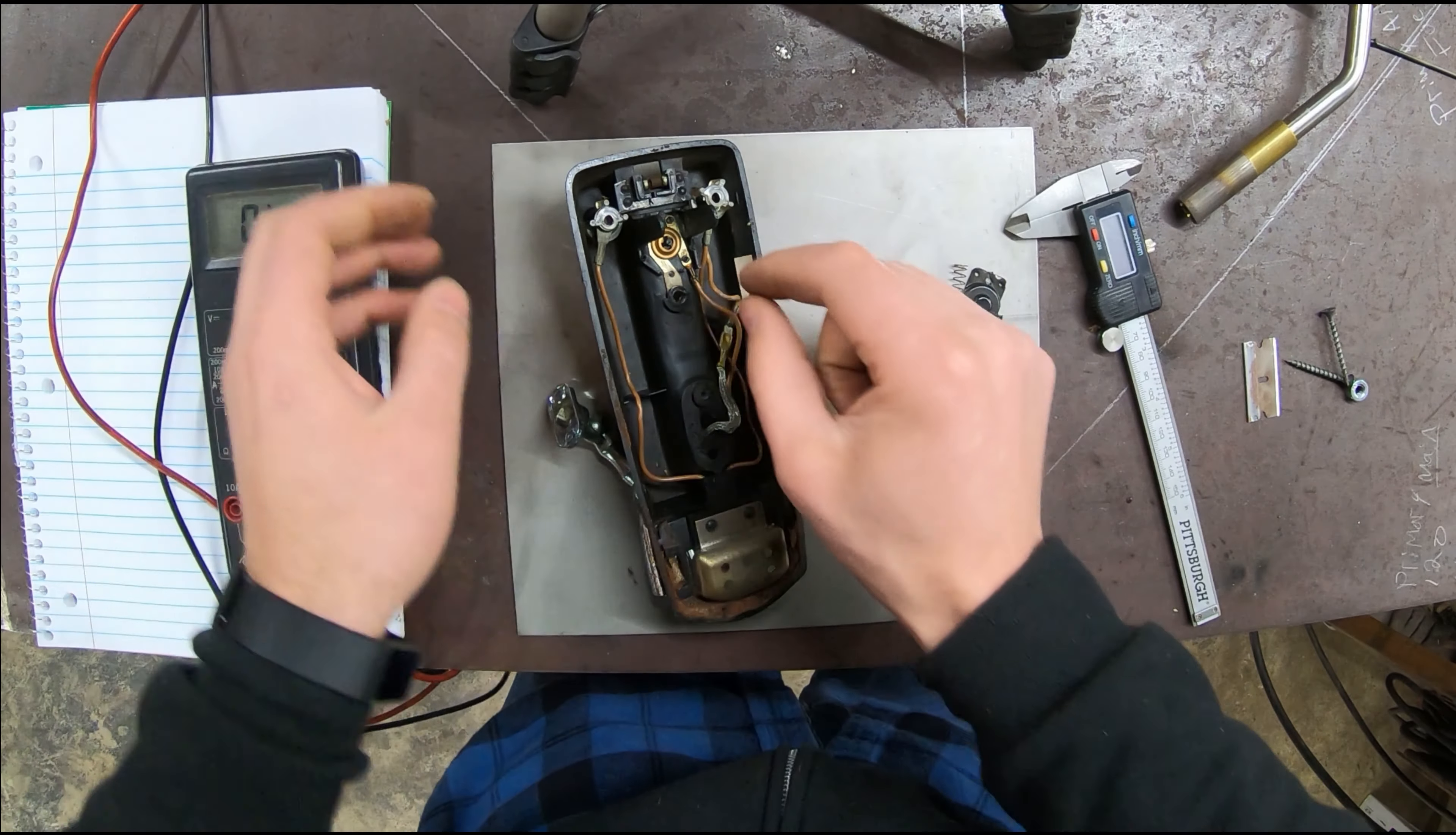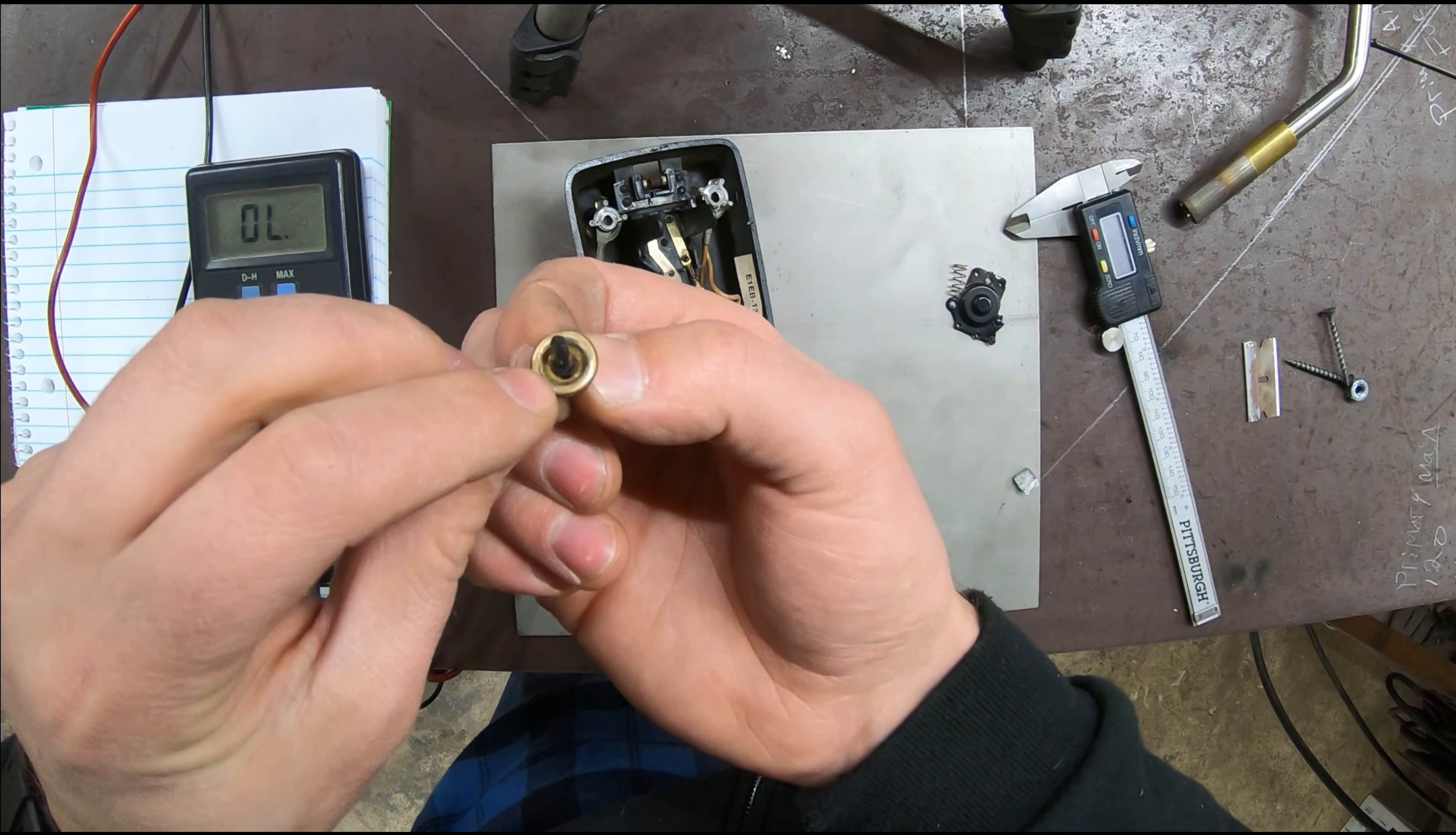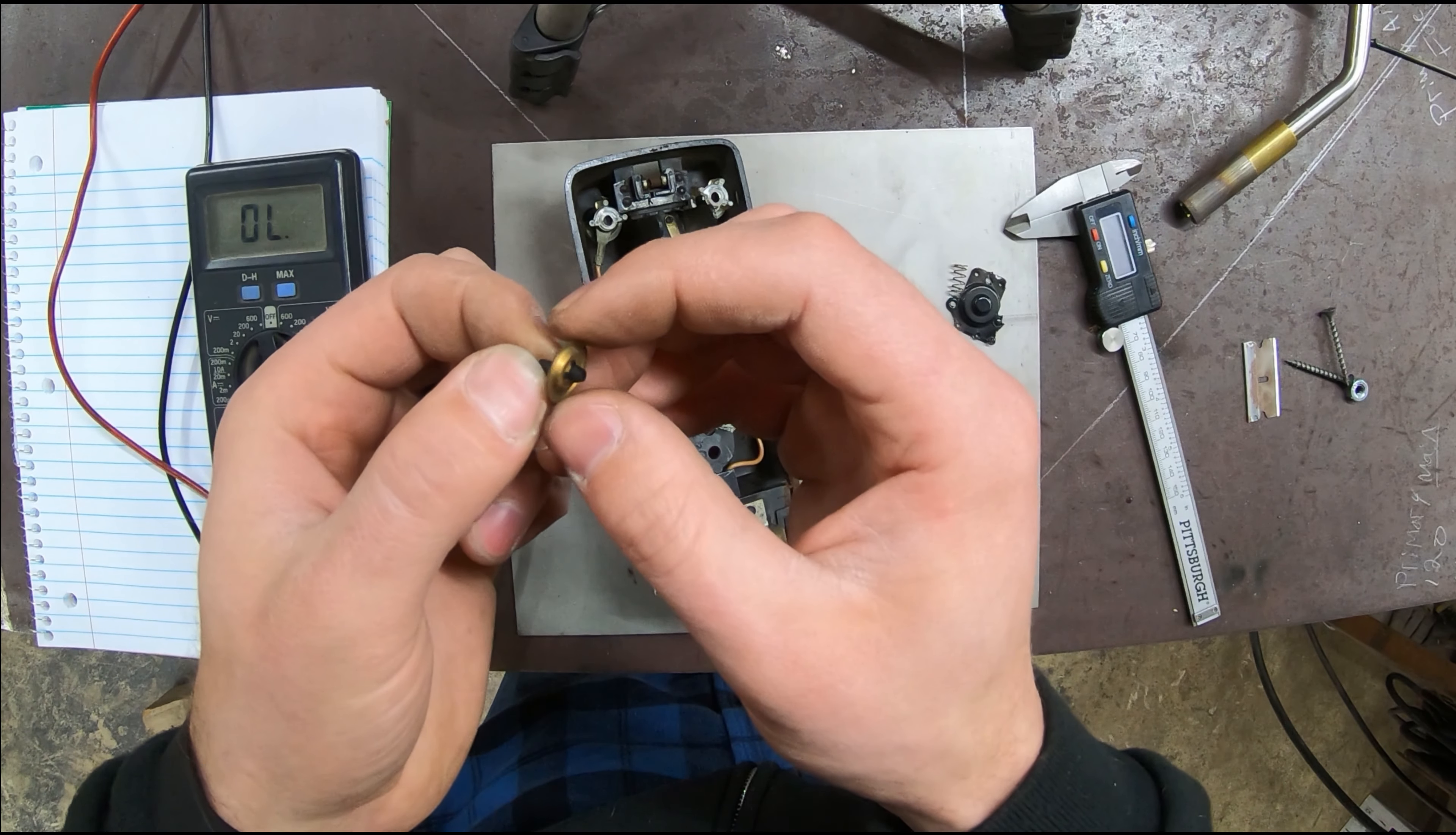But when I had it apart, I noticed one other issue. On this contactor, there is a little rim down here that when you push this up to turn the map light off, it pushes against this. It's mostly broken off. So I'm going to sketch up some measurements and go 3D print a new one.